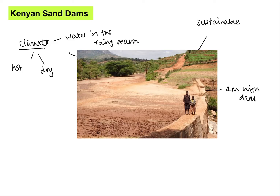Our water is then trapped in between these sand particles, and normally the ratio is something like one third sand to two thirds water. Linking back to the climate we just talked about, in the dry season this sand protects the water, meaning it doesn't evaporate as quickly. In the hot dry season the river is likely to dry up, so wells can be dug through the sand to get the water underneath.